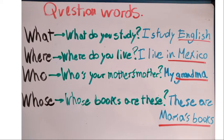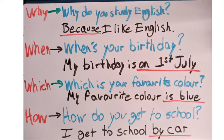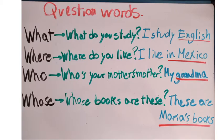In English we have different question words, such as: what, where, who, whose, why, when, which, or how. Now we are going to start with the first words.